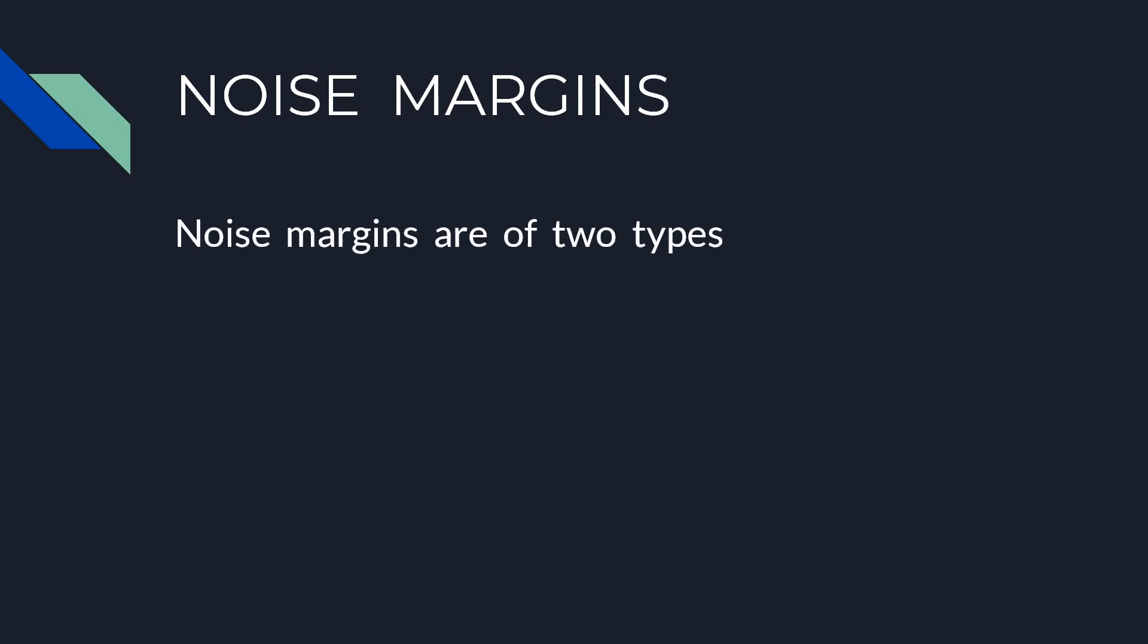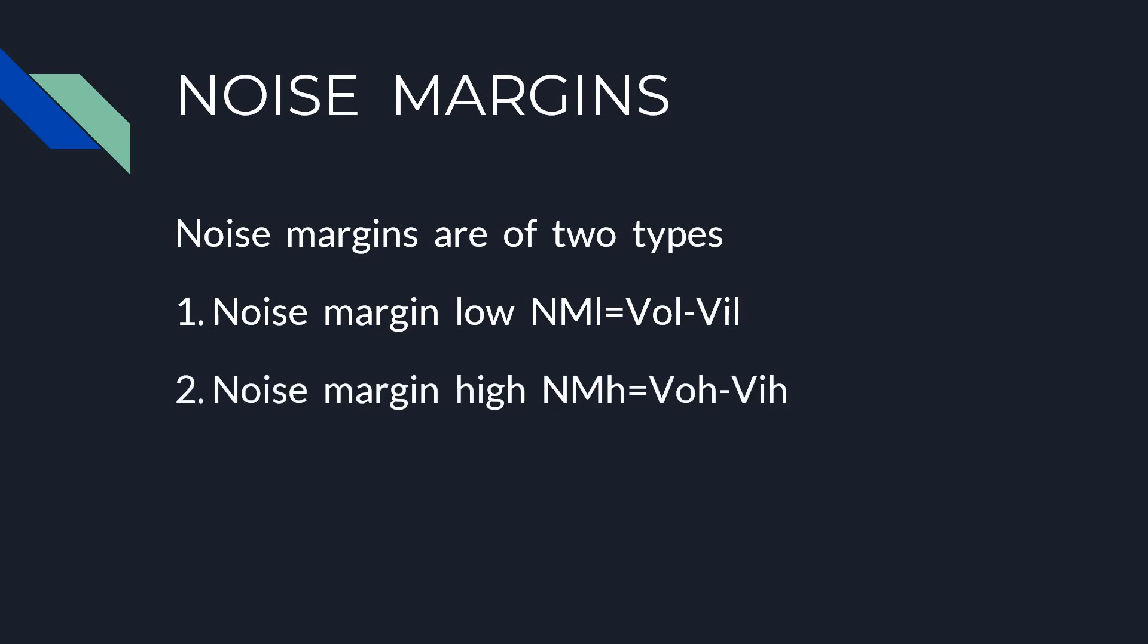There are two types of noise margins. One is the noise margin low, NML, which is VOL minus VIL, and noise margin high, NMH, which is VOH minus VIH.